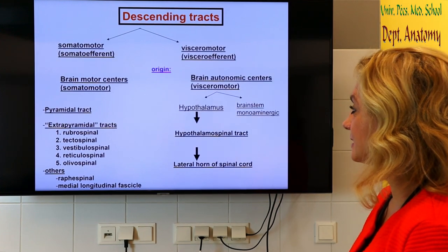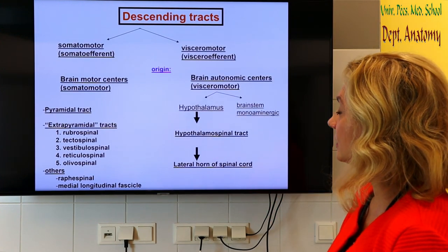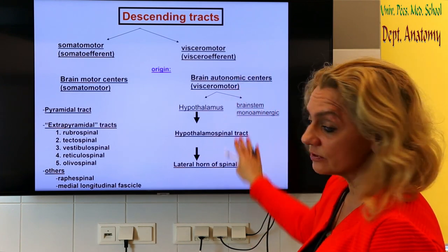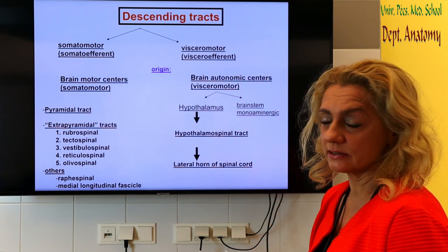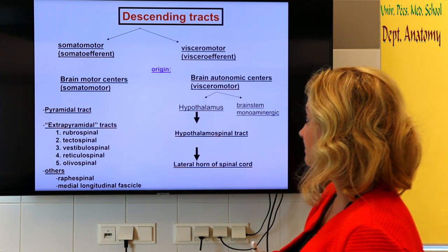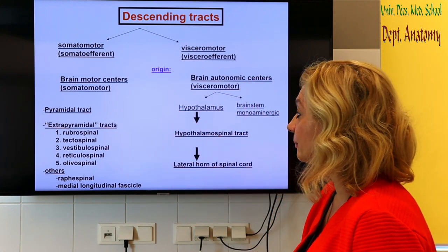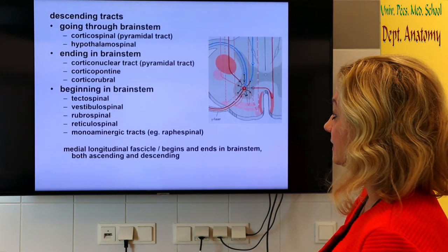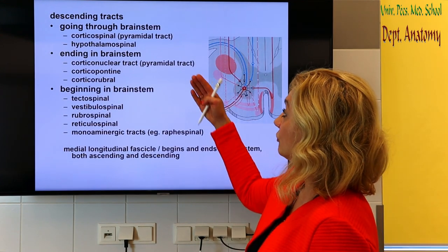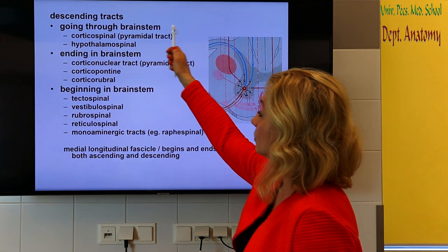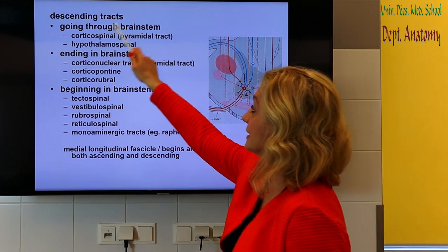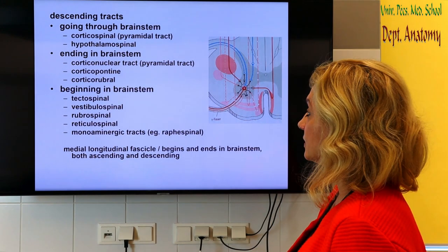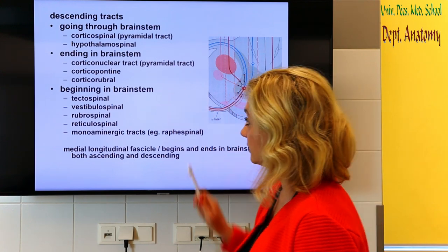Let's continue with the descending tracks. There are somatomotor and visceral motor pathways. The visceral motor will be discussed in detail when we talk about the autonomic nervous system. We are going to focus on the pyramidal and extrapyramidal tracks which go through or begin in the brainstem, just like when we discussed the spinal cord pathways. We can group the tracks into pathways according to their different functions. I'm going to start with the pyramidal tract.